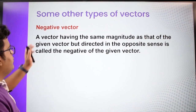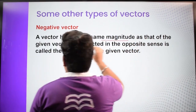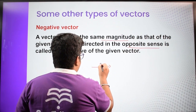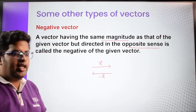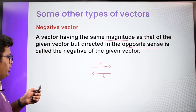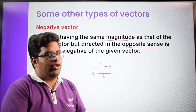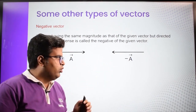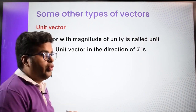A negative vector is a vector having the same magnitude as the given vector but in the opposite direction. For example, if we have vector A pointing in one direction, then negative A has the same magnitude but points in the opposite direction. So when you multiply a vector by minus one, you are only changing its direction — the magnitude remains the same.